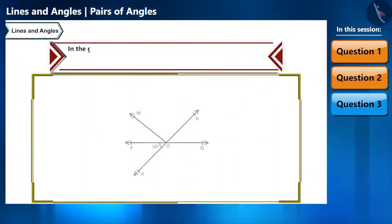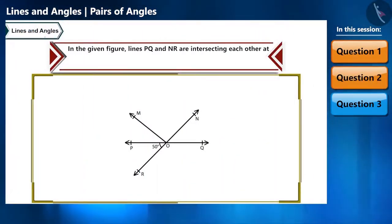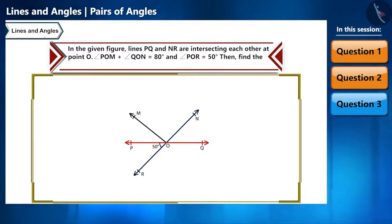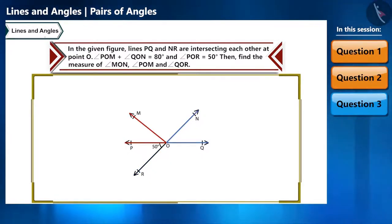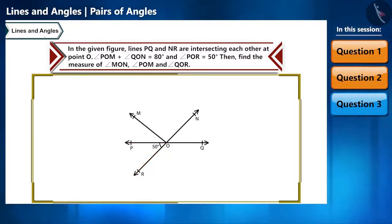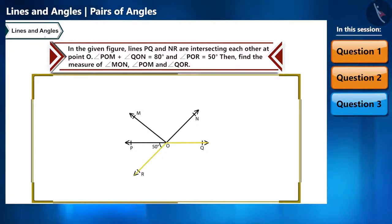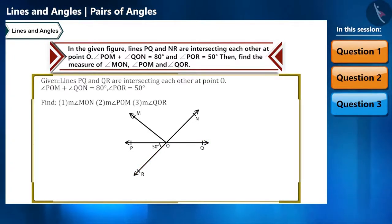In the given figure, lines PQ and NR are intersecting each other at point O. Angle POM plus angle QON equals 80 degrees, and angle POR is 50 degrees. Find the measure of angle MON, angle POM, and angle QOR. First, note how many lines there are.